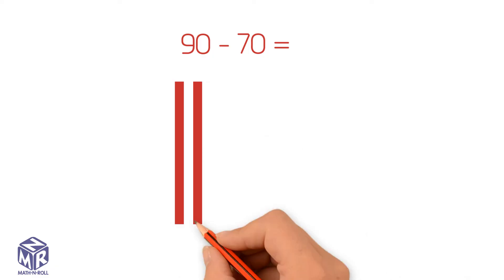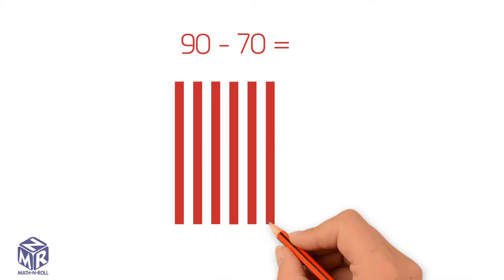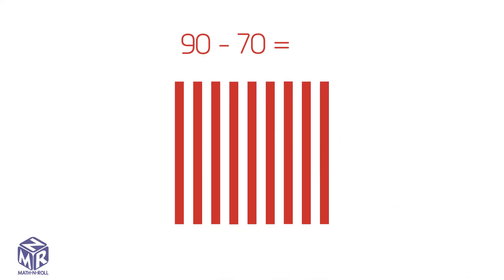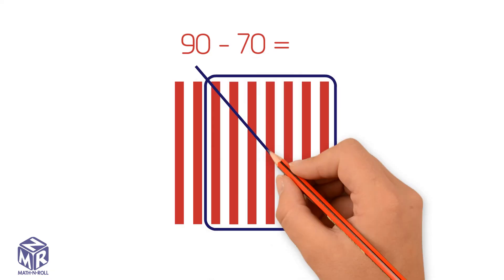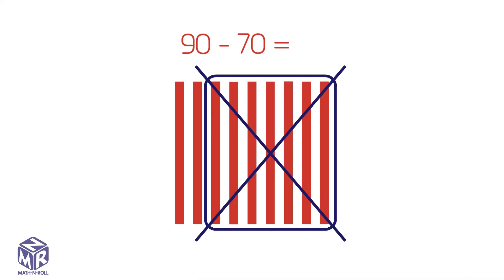Let's try another example, 90 minus 70. 90 has 9 tens and 70 has 7 tens. Subtract the tens. We get 2 tens or 20.